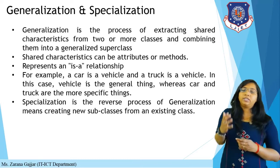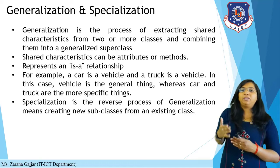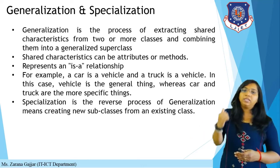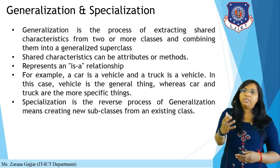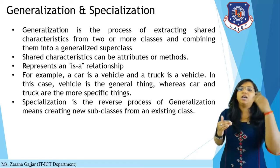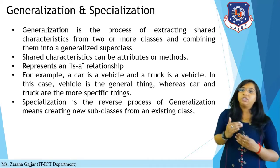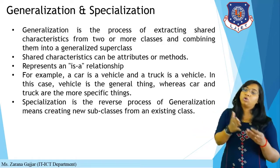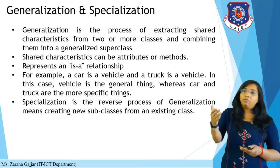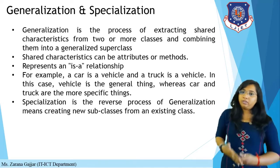Here, saving account and current account are generalized into a particular account. The shared characteristics can be attributes or methods. Attributes and methods of saving account as well as current account are accessible by the parent account. Generalization represents an 'is-a' relationship — saving account is an account, and current account is an account.